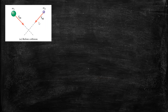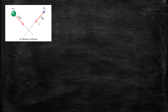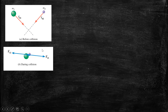The collection of objects being studied is referred to as the system. In this case, the system contains only the two objects. They will interact during the collision and then depart with final velocities VF1 and VF2.